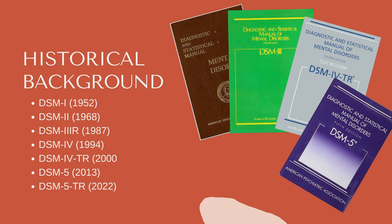The history of mental health diagnosis traces back to ancient civilizations, with Hippocrates introducing the concept of humoral imbalance in the 5th century BCE. During the Middle Ages, mental illnesses were often attributed to supernatural causes, while the Renaissance saw a resurgence of scientific inquiry. In the 18th and 19th centuries, Pinel advocated for humane treatment and observable symptom-based classifications. Some work done in the early 20th century laid the groundwork for modern diagnostic systems, and the DSM, first published in 1952 and periodically updated, standardized mental health diagnosis. Today, the DSM-5 continues to guide clinicians, reflecting ongoing research and societal changes.